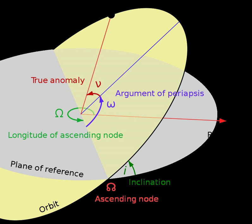The inclination of orbits of natural or artificial satellites is measured relative to the equatorial plane of the body they orbit, if they orbit sufficiently closely. The equatorial plane is the plane perpendicular to the axis of rotation of the central body.